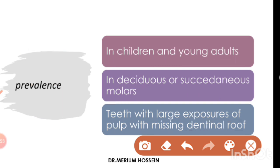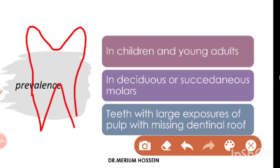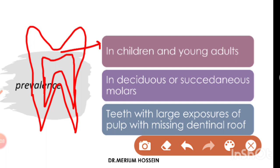Contrary to that, if a tooth has a dentinal wall intact with a dentinal roof over the pulp chamber, the pulp tissue cannot grow into the crown — and then it cannot be called a chronic hyperplastic pulpitis condition. So for chronic hyperplastic pulpitis to occur, there needs to be a tooth with a large cavitated lesion and no dentinal roof over the pulp chamber.